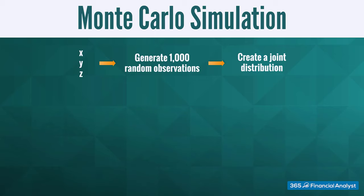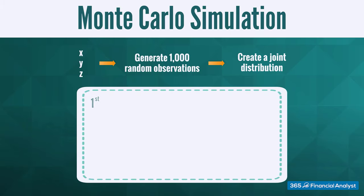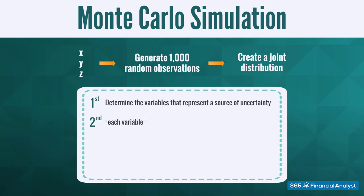In layman terms, a Monte Carlo simulation consists of the following series of steps. First, determine the variables that represent a source of uncertainty. Second, assume a distribution for each variable. Please note that the distribution chosen is up to the analyst's discretion, and the final model predictions will be as good as the analyst's choice of distribution for the unknown variables.